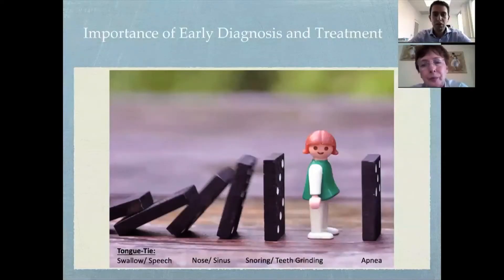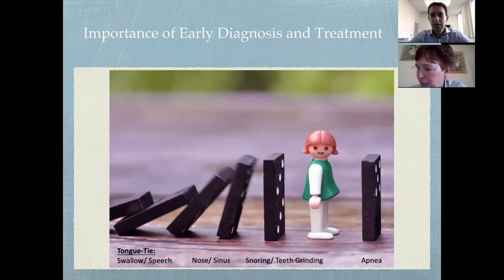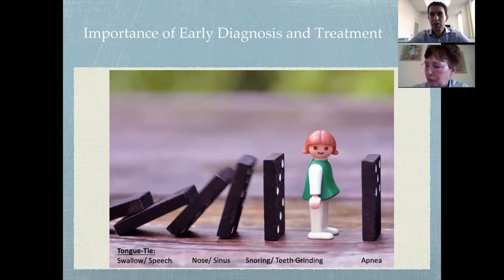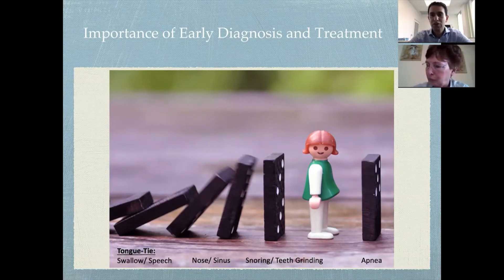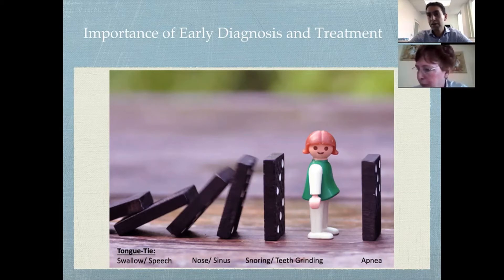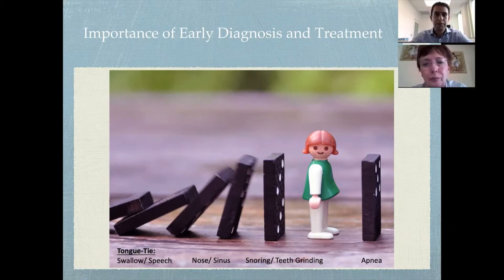That underscores the importance of identifying these issues early, because tongue tie issues may present in infants with swallowing and speech issues. But if it goes undiagnosed, our recent studies show that it can lead to underdevelopment of the maxillofacial skeleton as a risk factor for nasal breathing limitations and sinus issues, and then later on cause functional and structural issues that affect the airway, leading to snoring, teeth grinding, and eventually sleep apnea.